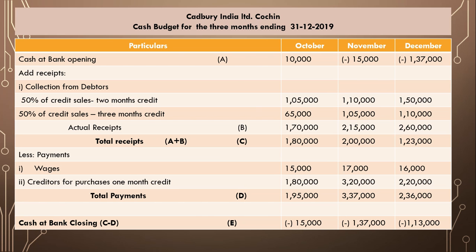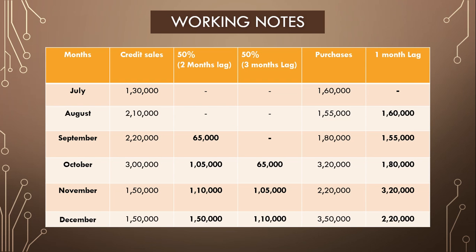Working note for credit sales: 50% with two months lag and 50% with three months lag. For July sales of 1,30,000 — 65,000 received in September and 65,000 in October. For August sales of 2,10,000 — 1,05,000 received in October and 1,05,000 in November. For September sales of 2,20,000 — 1,10,000 in November and 1,10,000 in December. For October sales — 1,50,000 in December and 1,50,000 in January (not taken).